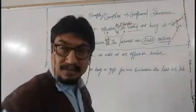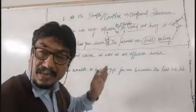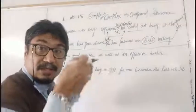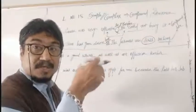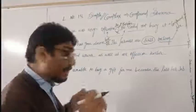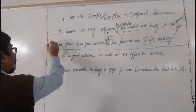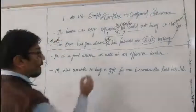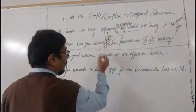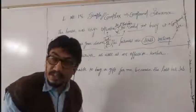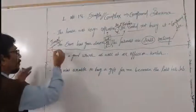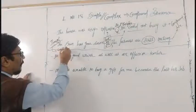Suppose these two sentences are given to you and it is told to make it complex, not compound. You will think which conjunction would be useful for total contrast. You will use 'though': 'Though the sun has gone down, the farmers are still working.' 'Though' indicates this is a complex sentence.